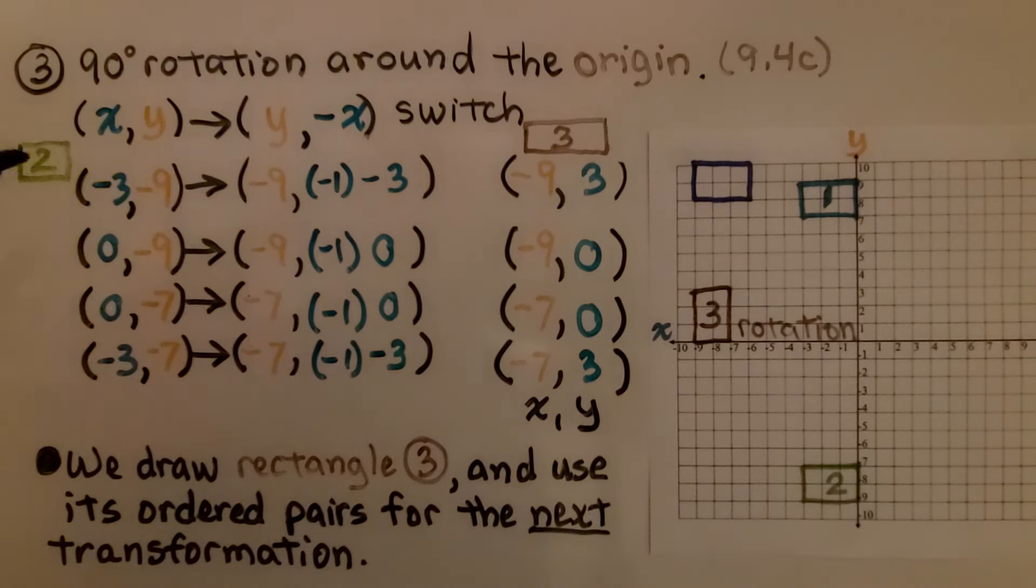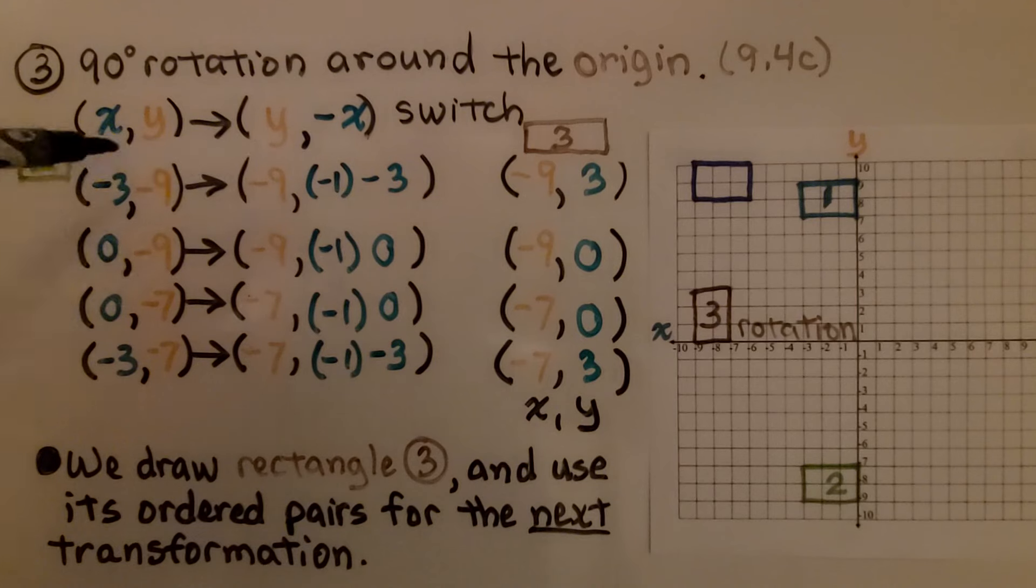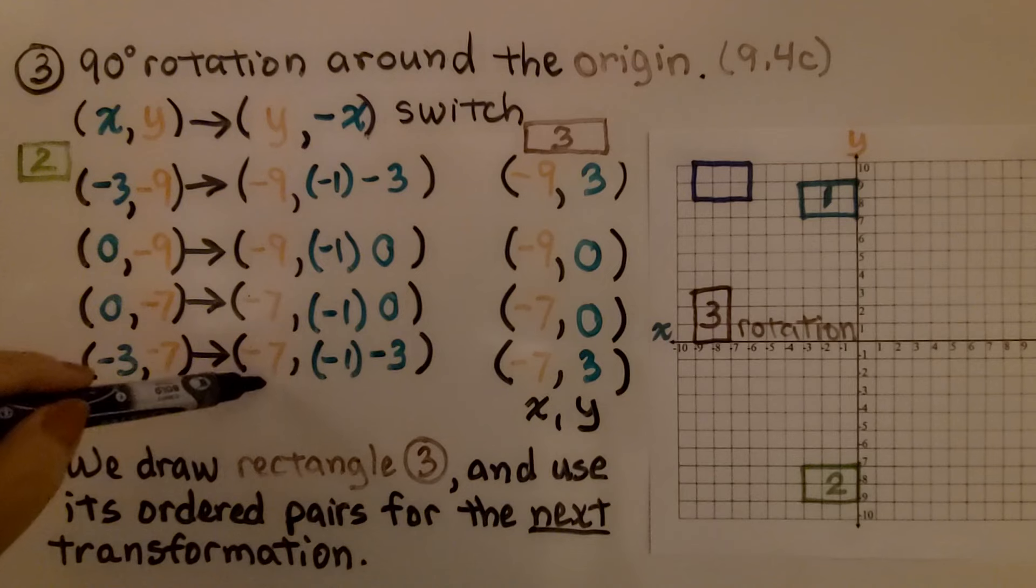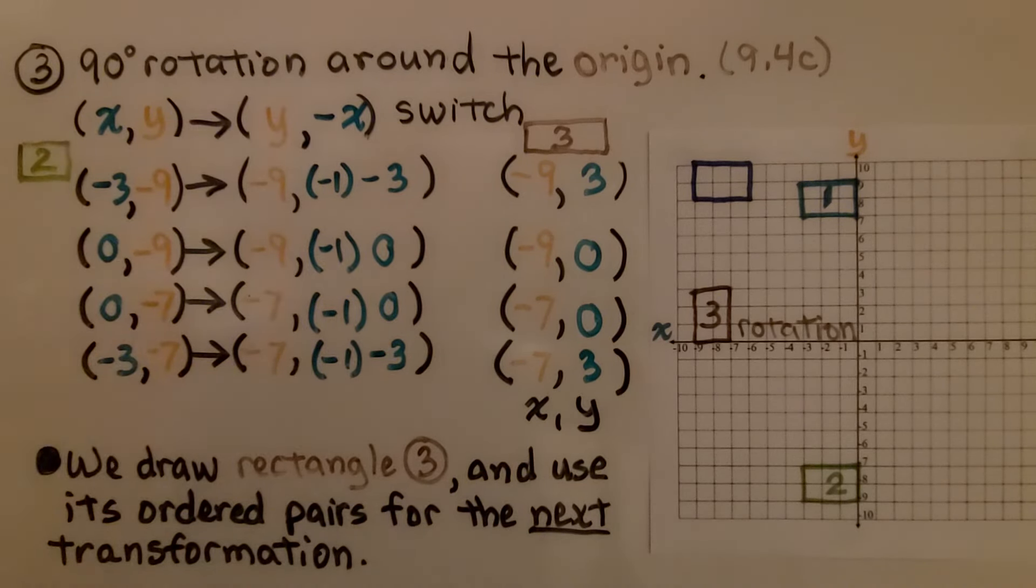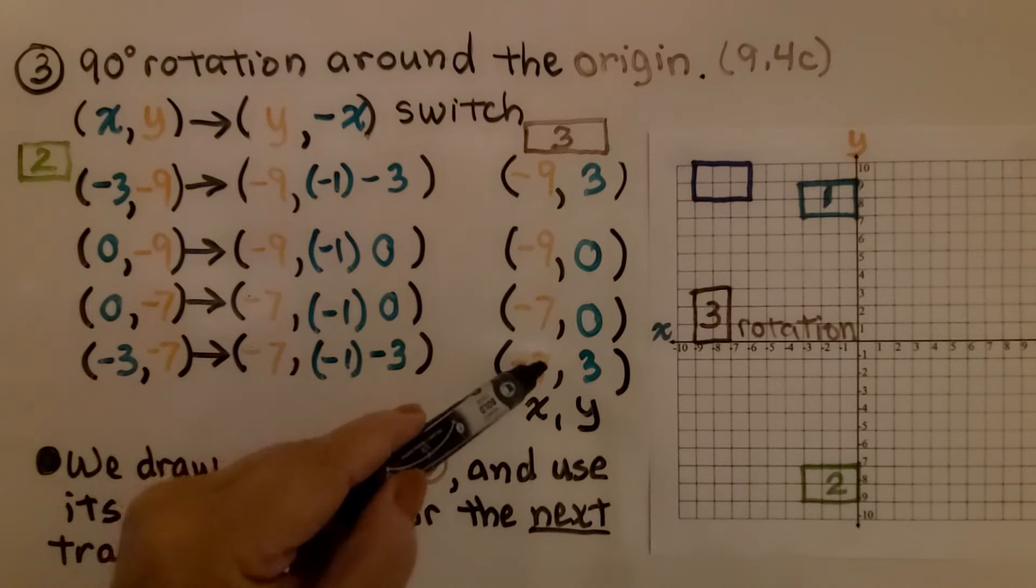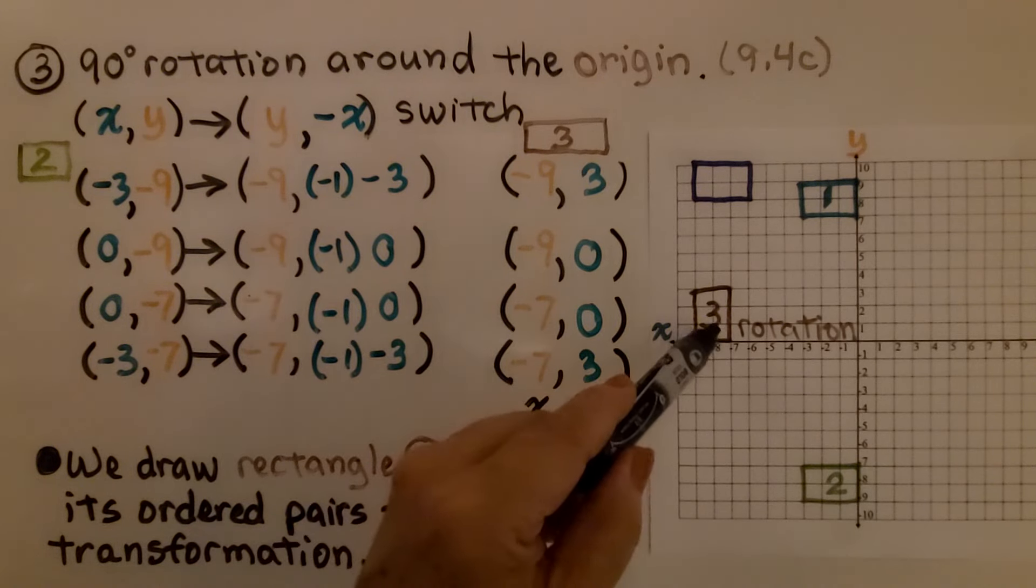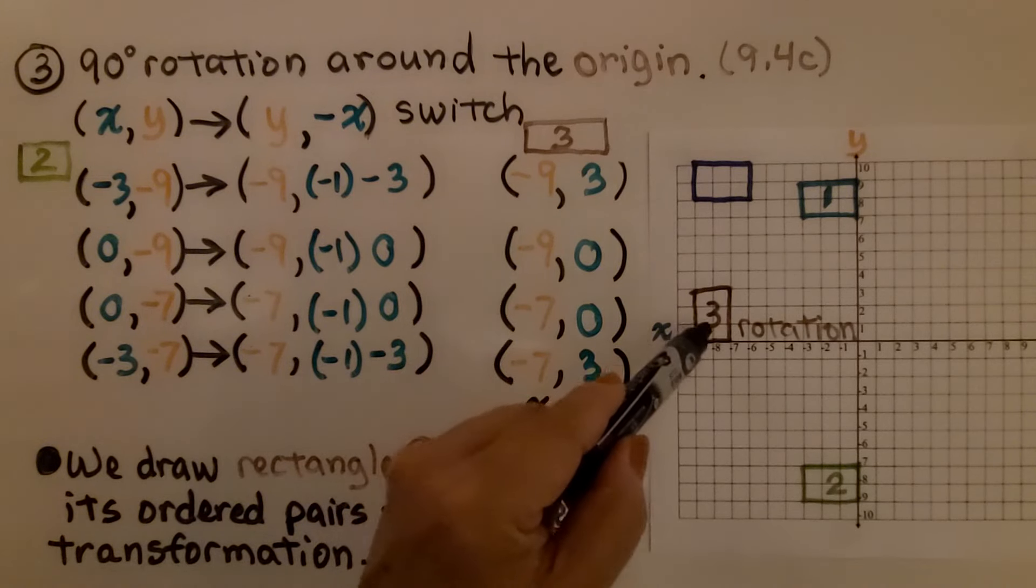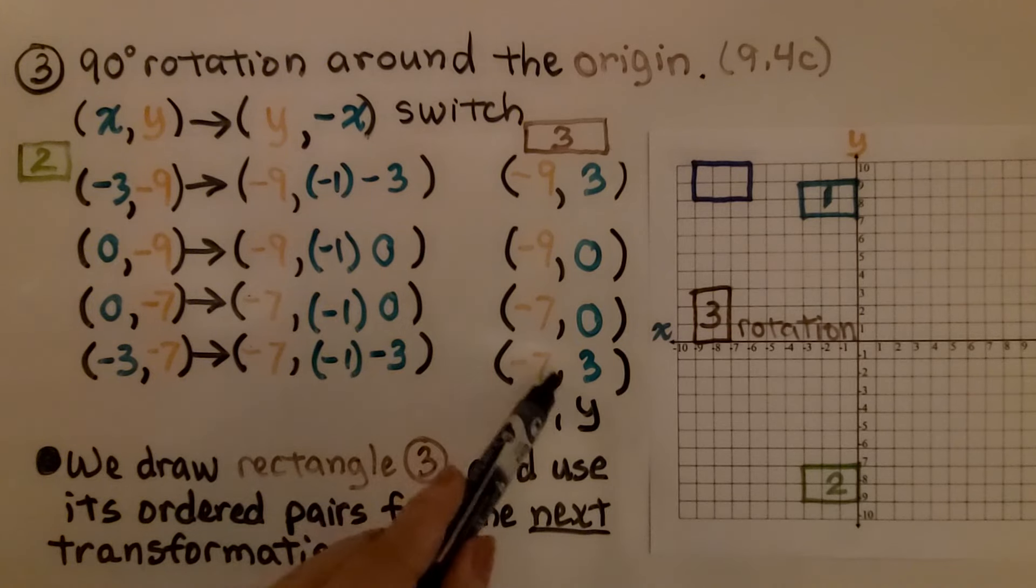We apply that to the ordered pairs for this previous transformation. We're going to multiply all the x values by negative 1. We're going to list the y values, but we're going to swap places with them so that the y is now the new x, and this x is now the new y. We get our ordered pairs for our third transformation of that clockwise 90-degree rotation. It puts us here. We plot the points, we connect with line segments, and we know that number 3 rectangle is here. We draw it, and now we use its ordered pairs for the next transformation.